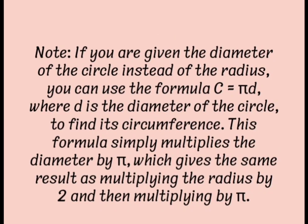Note: If you are given the diameter of the circle instead of the radius, you can use the formula C equals pi d, where d is the diameter of the circle, to find its circumference. This formula simply multiplies the diameter by pi, which gives the same result as multiplying the radius by 2 and then multiplying by pi.